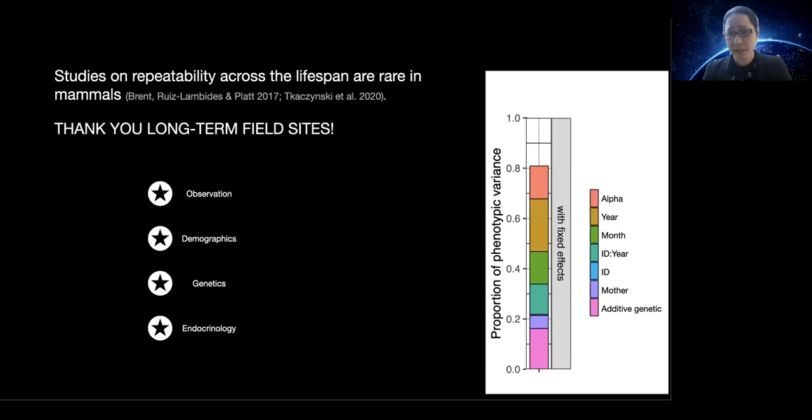Studies on repeatability across the lifespan are rare in mammals, but thanks to the incredibly difficult and complicated work done by researchers to manage field sites and keep them running for decades, we now have more and more detailed observational demographic genetic and hormonal information on study subjects across lifespans. It really feels like the sky's the limit now for asking and investigating really complex questions.